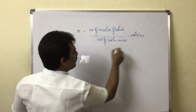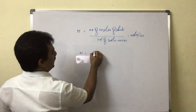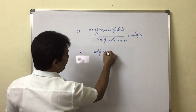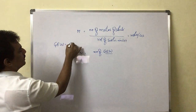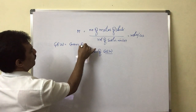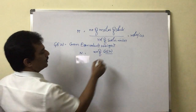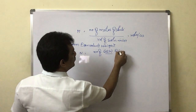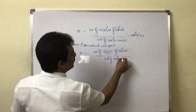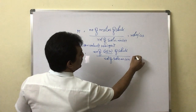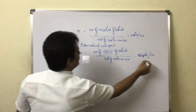The same type of concentration term, but the difference is here. Normality is nothing but the number of gram equivalent weights — G-E-W stands for gram equivalent weight — of solute divided by the volume of solution in liters. This is normality.